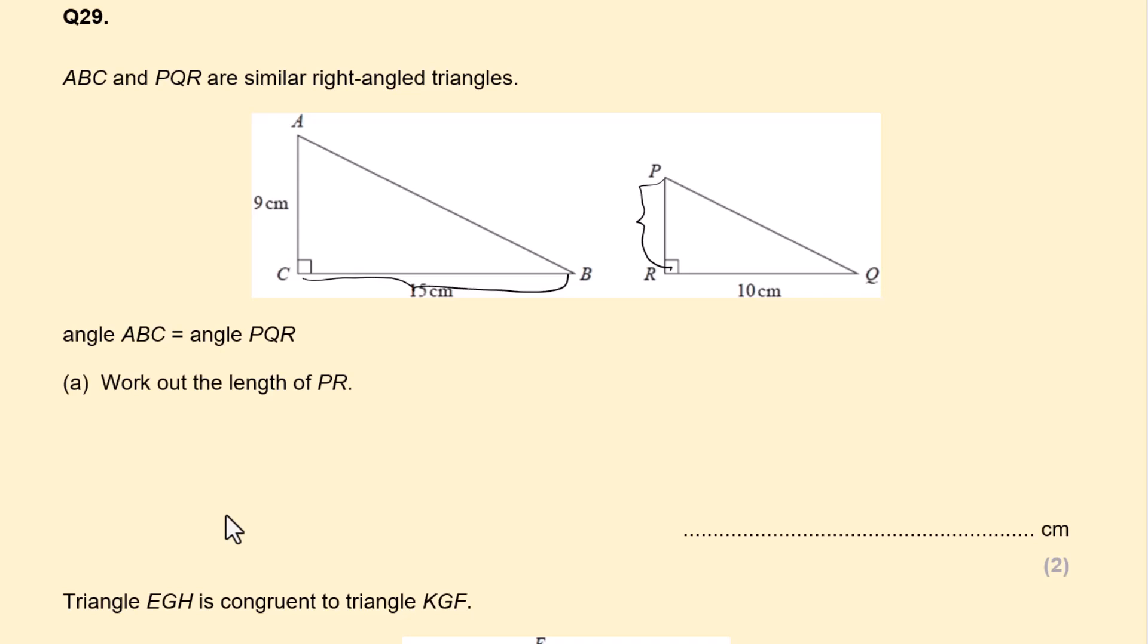The corresponding sides that are given. So 15 and 10. So find the scale factor first. So scale factor will be the big shape divided by the smaller shape corresponding side which is 1.5. Now let's find the corresponding side. The bigger shape is 9. The small shape we're finding what it is. So divide by the scale factor. 9 divided by 1.5 which is 6 centimeters. So the length of PR is 6 centimeters. This is worth 2 marks.